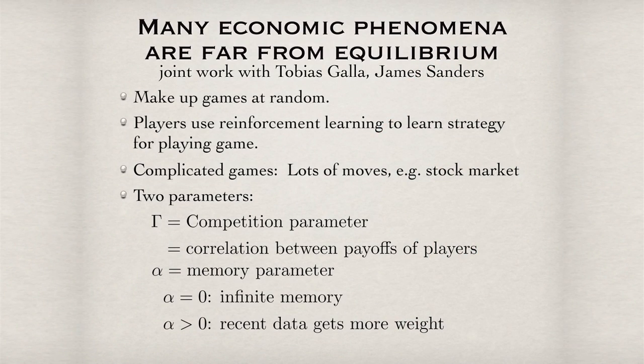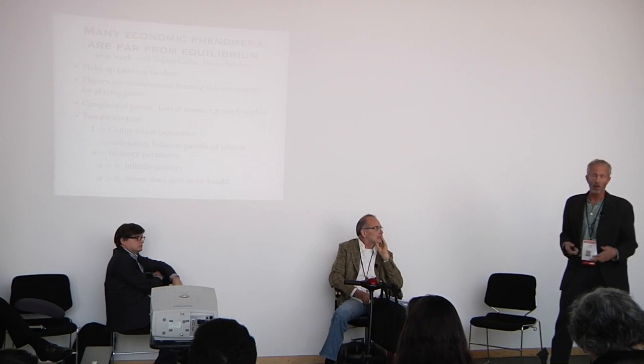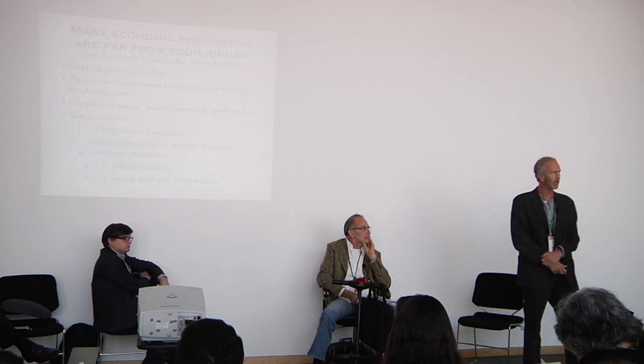I'm going to argue that many economic phenomena — in fact the most important ones — are not in equilibrium, and are far from equilibrium. To do that, I'll highlight work I did with Tobias Galla, and more recently with James Saunders, in which we just make up games at random. Our goal is to understand what happens in a typical game. We studied players using reinforcement learning — something shown to be a good model of how people behave in economic experiments. We study complicated games, like playing the stock market where you might have the option of investing in a thousand different stocks.